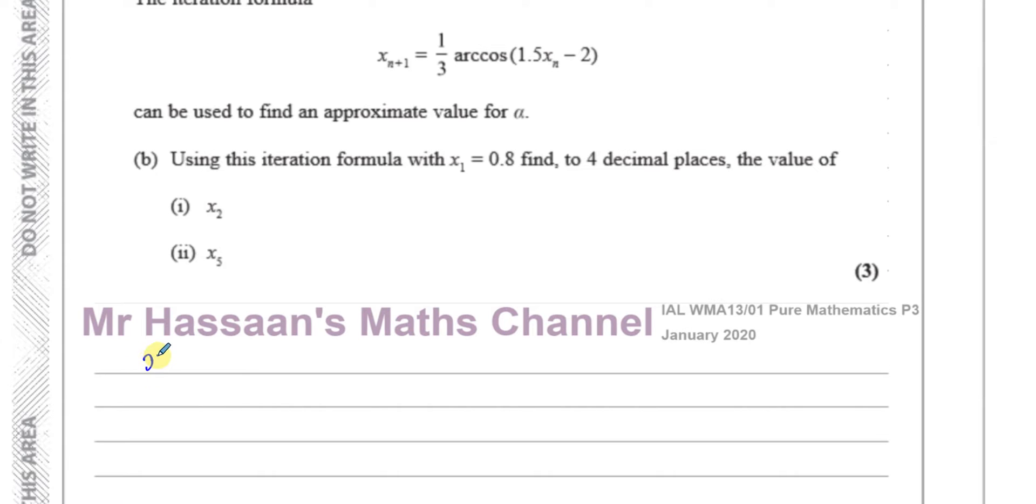So what I'm going to do here is first of all, I'm going to say that x2, I'm just going to state this fact, x2, so I'm showing I understand what's going on. x2 equals a third arc cosine. Now arc cosine means inverse cosine, that's all. It just means inverse cosine. So arc cosine 1.5 times x1, I'm going to write it like this first, minus 2.